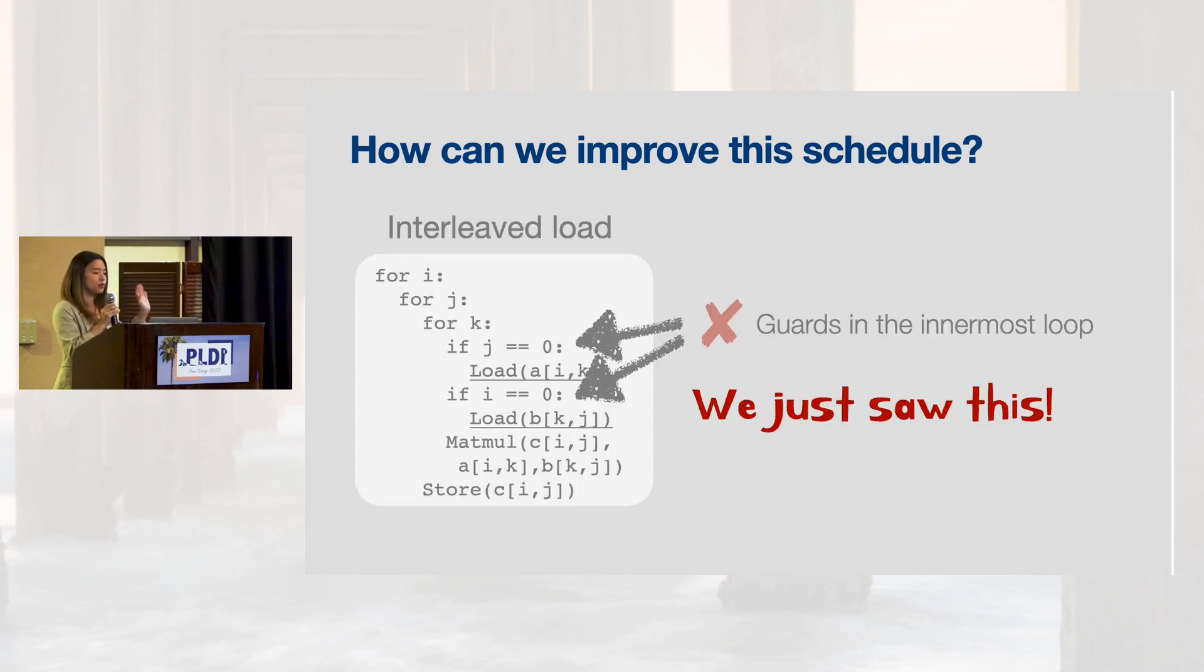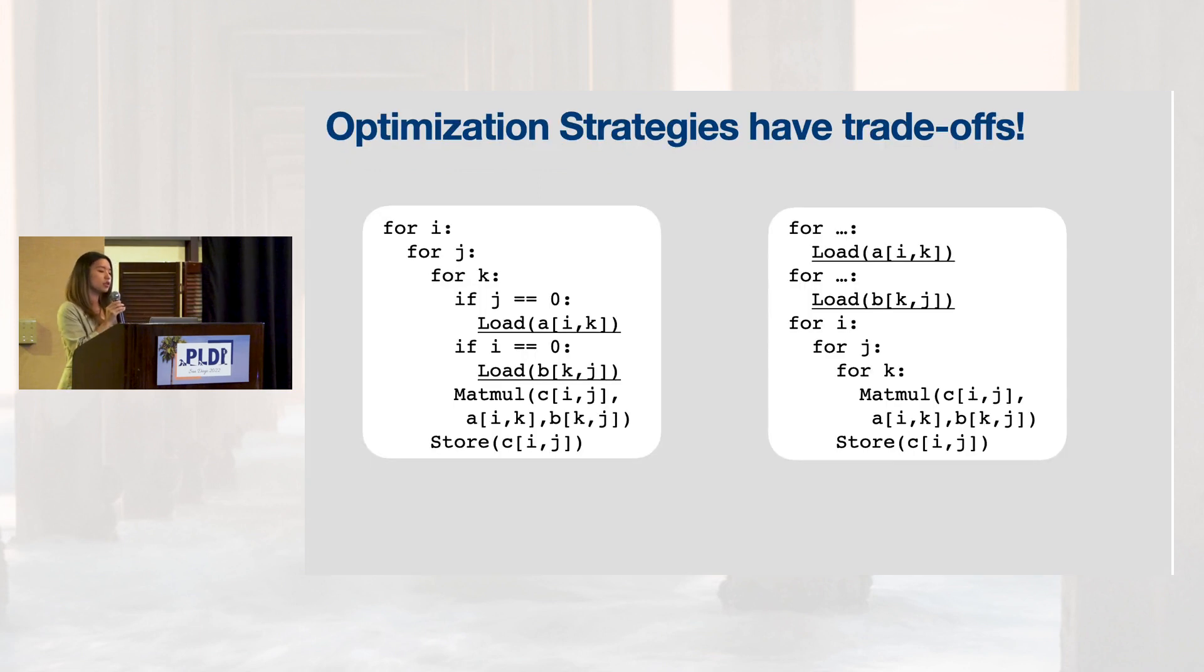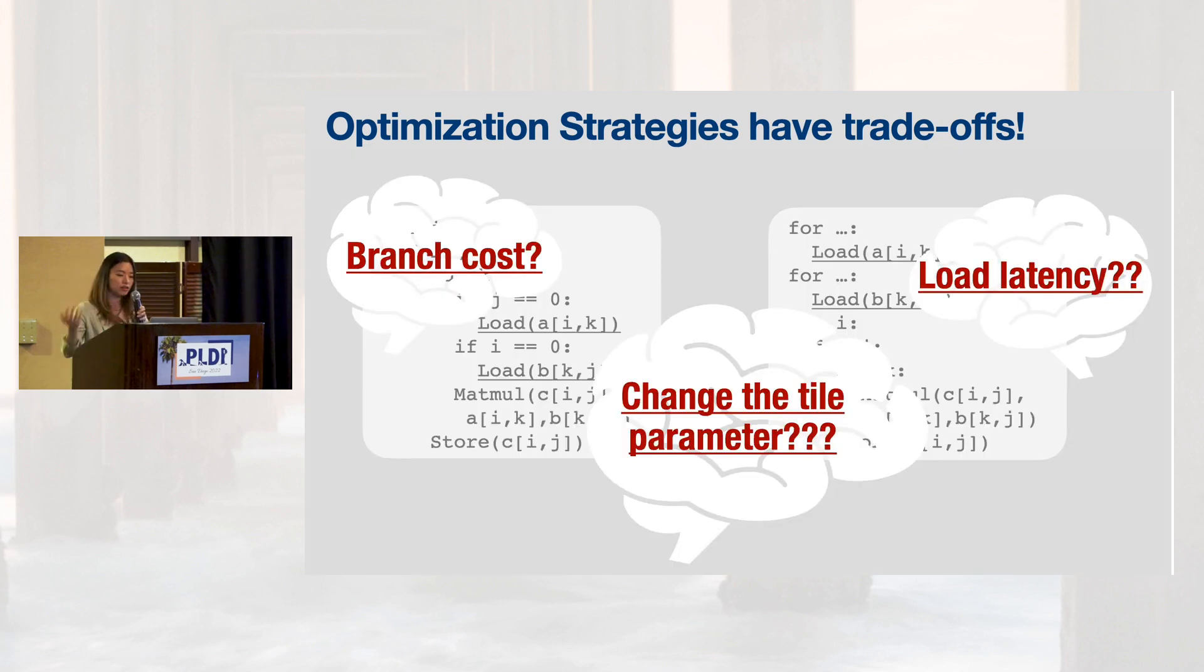Let's do that. And now we get this code, which we just saw. Recall that this code had guards in the innermost loop, which is expensive in general. So what does it mean? It means that optimization strategies have trade-offs. And to navigate through these trade-offs, you need to think through many aspects of the entire system. For example, what is the branching cost? What is the load latency? And what happens if we change the tile parameter? We could even ask the hardware developers to change the queue size. And the only way to find the best answer is by executing this code. We need to be able to rapidly prototype and execute code, and that was what EXO was built for.